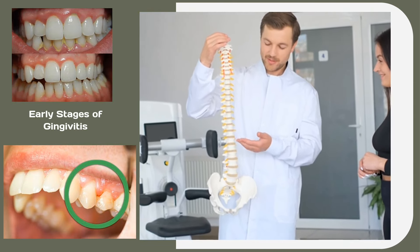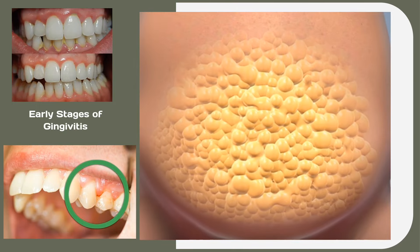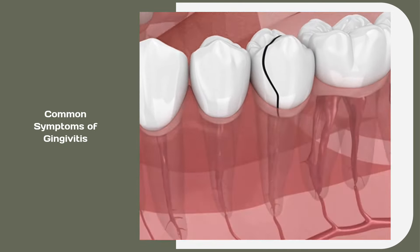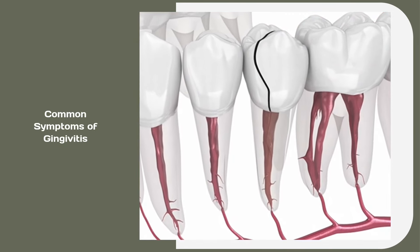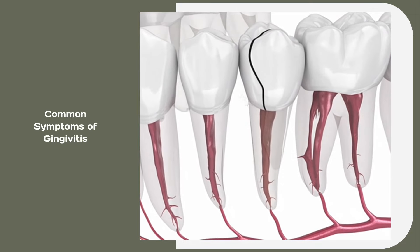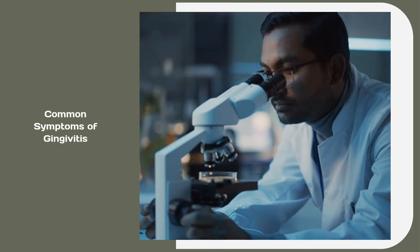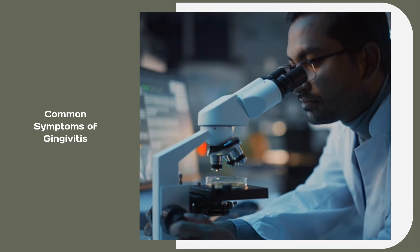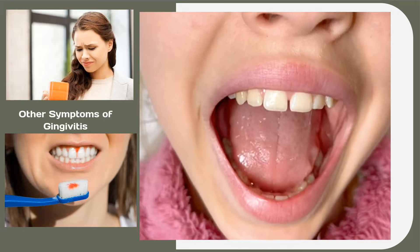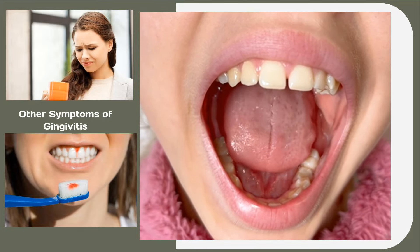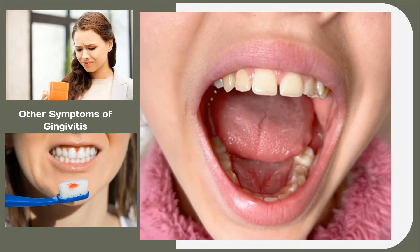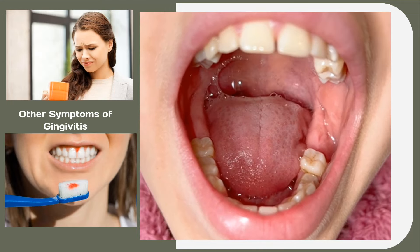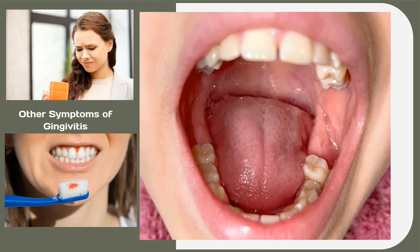Even in more advanced stages, the symptoms can be minimal. However, common symptoms that typically accompany gum disease include bleeding gums when brushing, redness, inflammation, and sensitivity of the gums. Other symptoms include a persistent unpleasant taste or smell from the mouth, deep gaps appearing between the gums and teeth, and even tooth loss or movement.